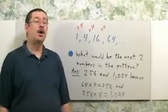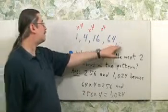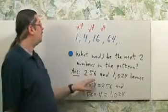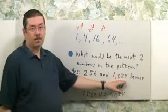Now you're being asked, what would be the next two numbers in the pattern? Just apply our rule. So the answer is going to be 256 and 1024.